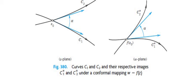Let c1 and c2 be two curves which intersect at the point z-naught in the z-plane. Let alpha be the angle between the tangents of these two curves. Then w = f(z) is a function, and the images of c1 and c2 are c1* and c2*. The point z-naught is mapped to f(z-naught). In this mapping, the orientations of c1 and c2 are preserved, and the angle alpha between them is also preserved.